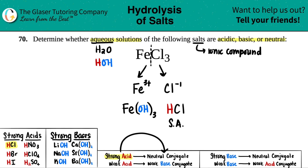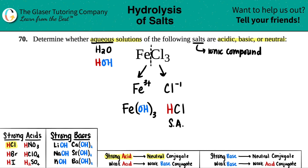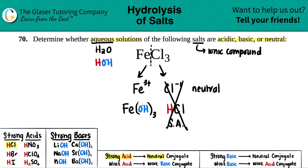Whenever you have a strong acid, its conjugate is so weak that it's basically classified as neutral. That's where the neutral option comes from. So this strong acid's conjugate has nothing to do with acidity or basicity — we can essentially disregard it.